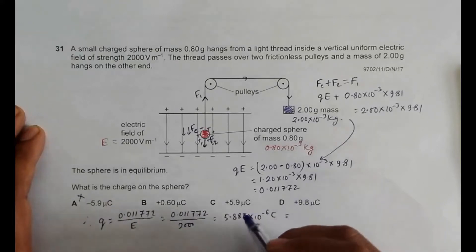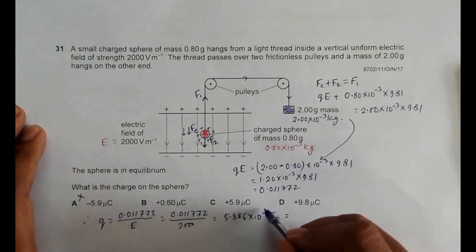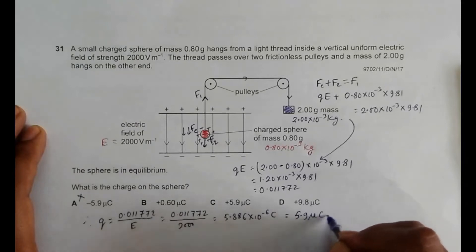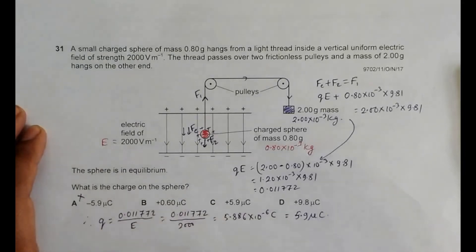Equal to 5.9 microcoulombs, 5.9 microcoulombs. So choice number C should be the correct answer.